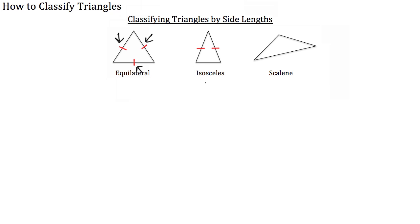The second type of triangle you can classify by side lengths is the isosceles triangle. An isosceles triangle is any triangle that has two legs that are congruent. So in that case, this leg and this leg, as denoted by the two red congruent tick marks, are equal.